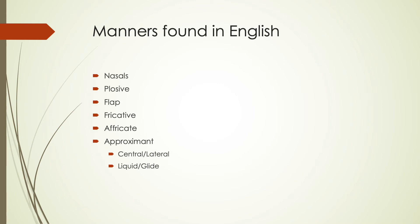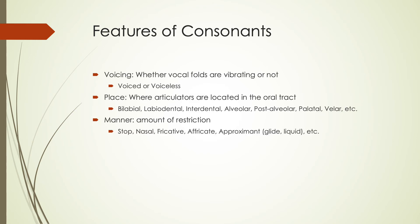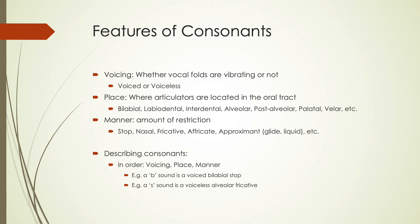Those are the main features — different kinds of place, manner, and voicing — and these are how we describe consonant sounds. When looking at the IPA handout and its symbols, we describe each sound based on voicing (voiced or voiceless), place (where the articulators are), and manner (how much restriction there is). This is the standard order in linguistics. For example, a B sound is a voiced bilabial stop, and an S sound is a voiceless alveolar fricative.